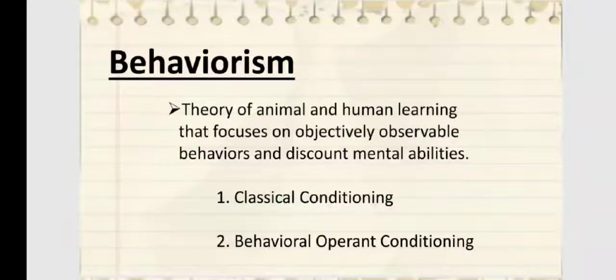Behaviorism, theory of animal and human learning that focuses on objectively observable behaviors and discount mental abilities. So these are the types of behaviorism. The first one is classical conditioning. The second one is behavioral operant conditioning.